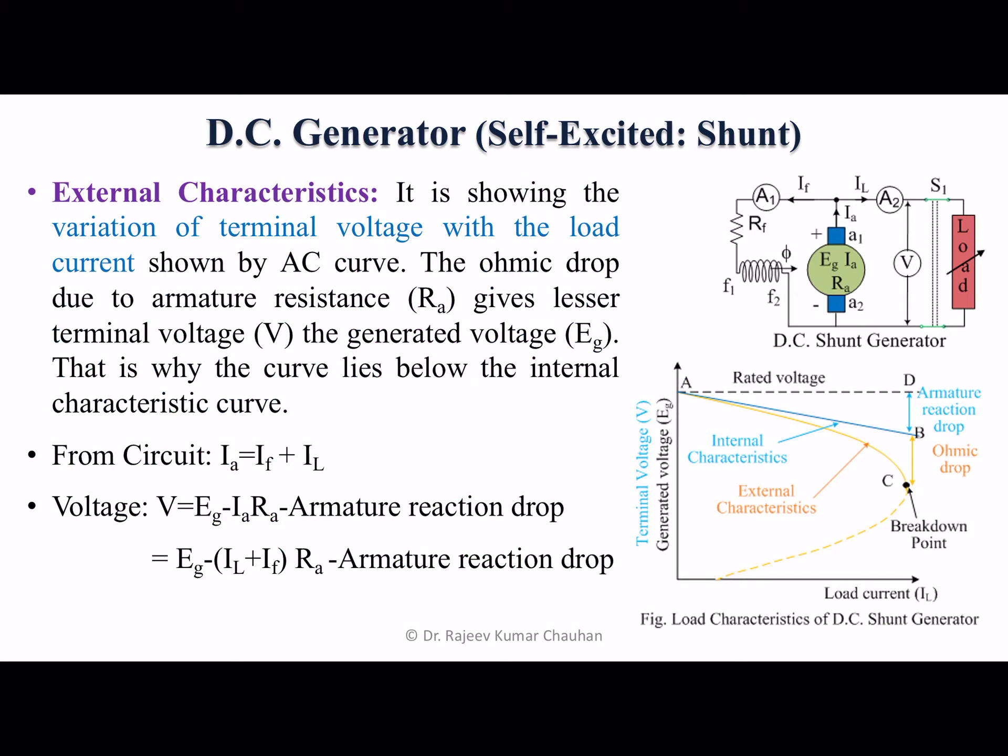From the circuit diagram, we can write down the equation that terminal voltage V equals Eg minus IA times RA voltage drop due to armature resistance minus armature reaction drop.